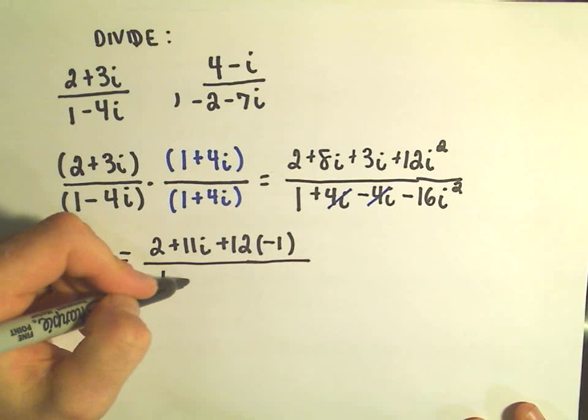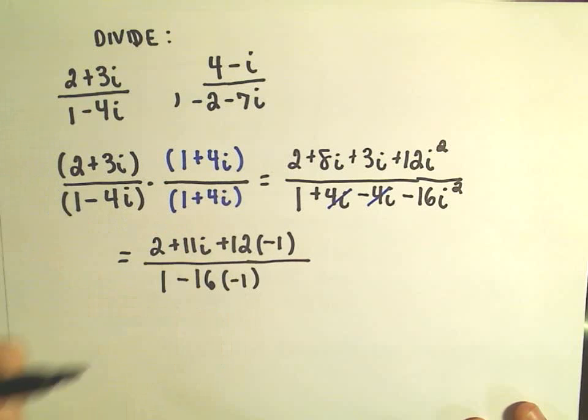And then we're going to do the same thing. We have 1 minus 16. i squared is negative 1.